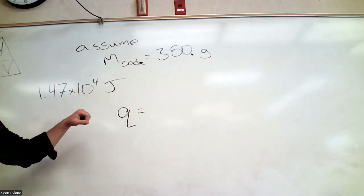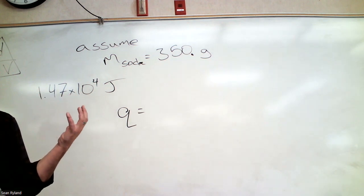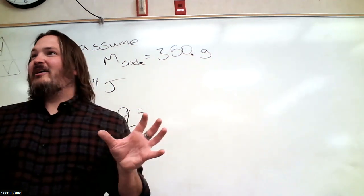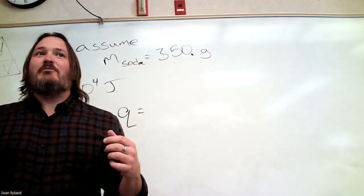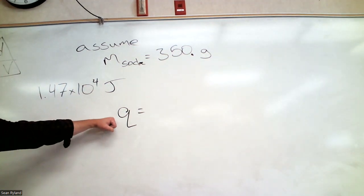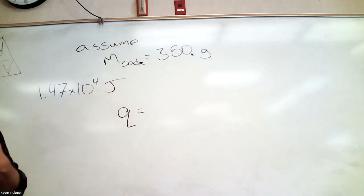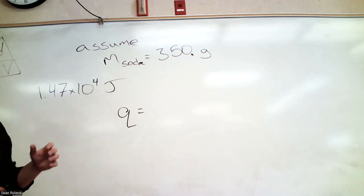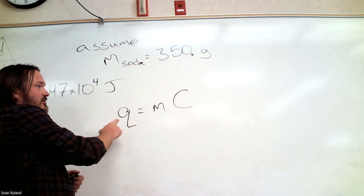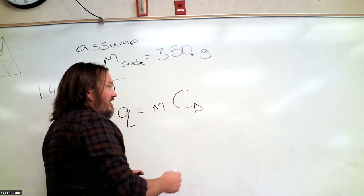Someone had the question on the quiz: what is Q again? Q is the amount of energy that changes hands - not literal hands, but you know what I mean. The amount of energy that goes into the soda is equal to the mass of the soda times the specific heat of the soda times delta T.